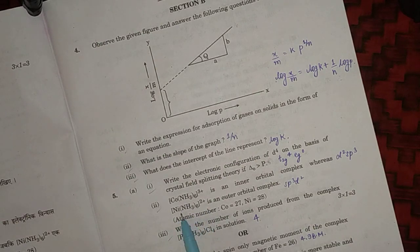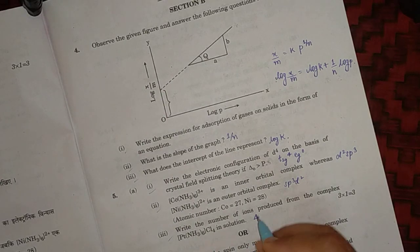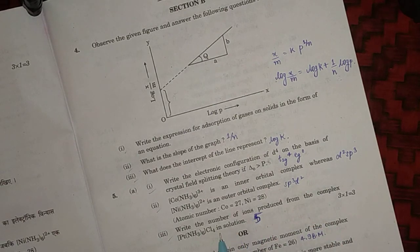Third question: write the number of ions produced from the complex [Pt(NH3)6]4+ and 4Cl-. So total, in total 5 ions will be released.